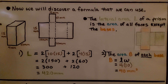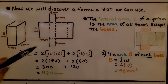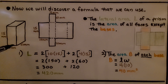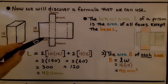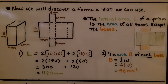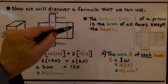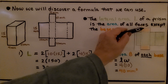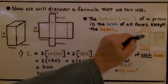Here we have a right rectangular prism. We can see its height is fifteen millimeters, this edge is four millimeters, and this dimension is ten millimeters. This is the net of the right rectangular prism. The lateral area L of a prism is the area of all the faces except the bases — so it doesn't count the bases at the top and bottom. This is the lateral area.